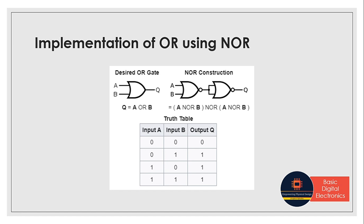Next we'll see how to implement OR gate using NOR gate. OR means it is made by inverting the output of a NOR gate, so we have to invert the output of a NOR gate. That means we need a NOR followed by a NOT — and from our last slide, a NOT is made by joining the inputs of a NOR gate. So a two-input NOR gate followed by a NOR with joined inputs will give us the same functionality as an OR gate.